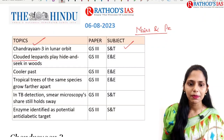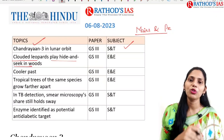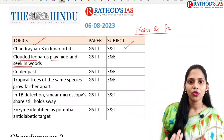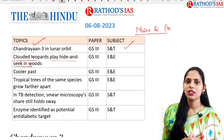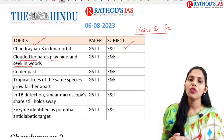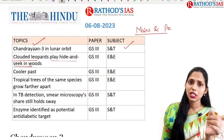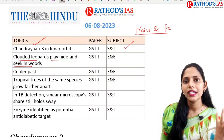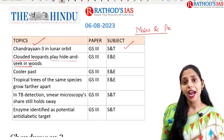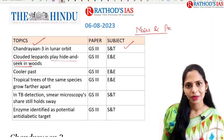The next topic is clouded leopards playing hide and seek in woods. Whenever any species appears in the news, it becomes important from a UPSC point of view. For the forest officer exam, that is the Indian Forest Service, the prelims is the same but mains is different. You will get around 20 questions in your prelims from environment and ecology, and UPSC has repeatedly asked questions regarding species in the news. So you have to know the facts regarding this clouded leopard. This topic is important from environment and ecology, which comes in GS paper 3.